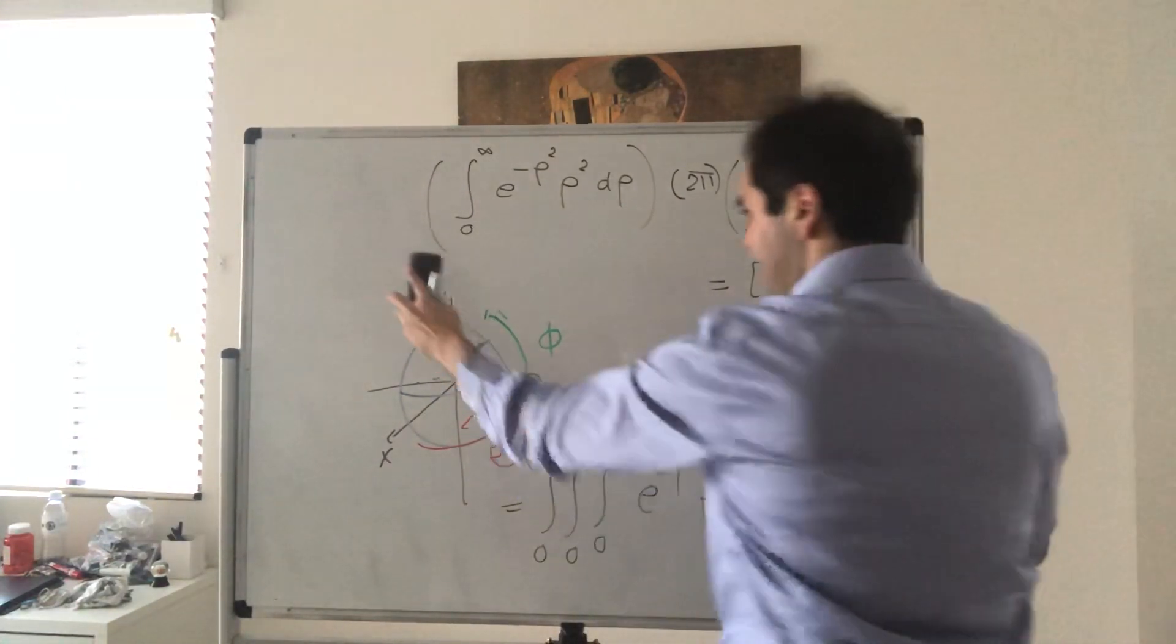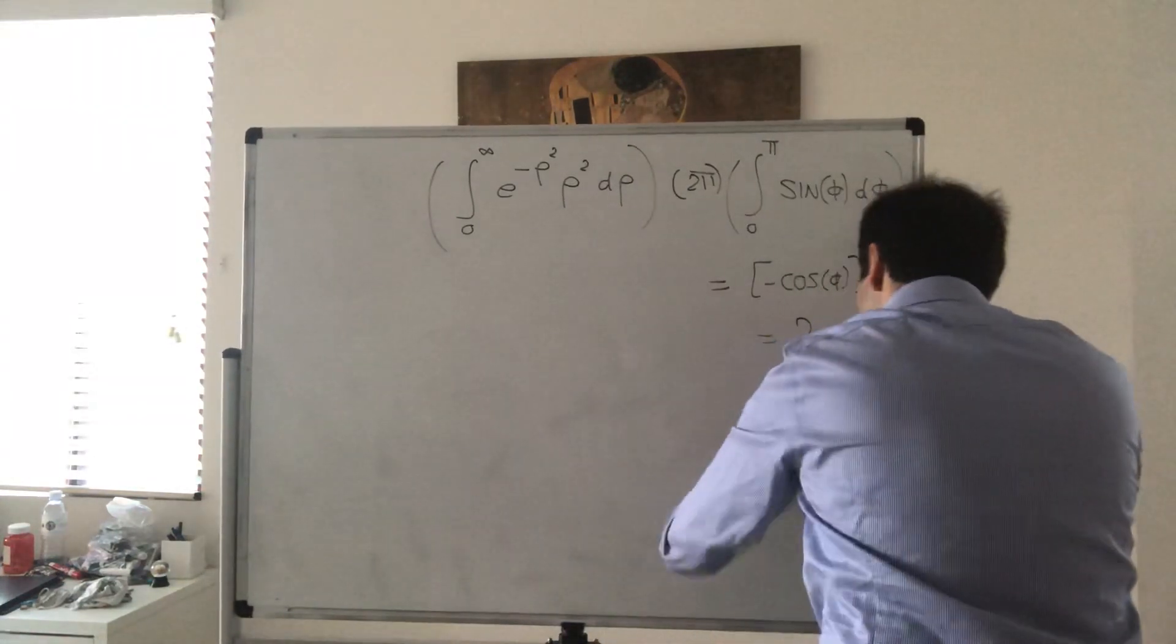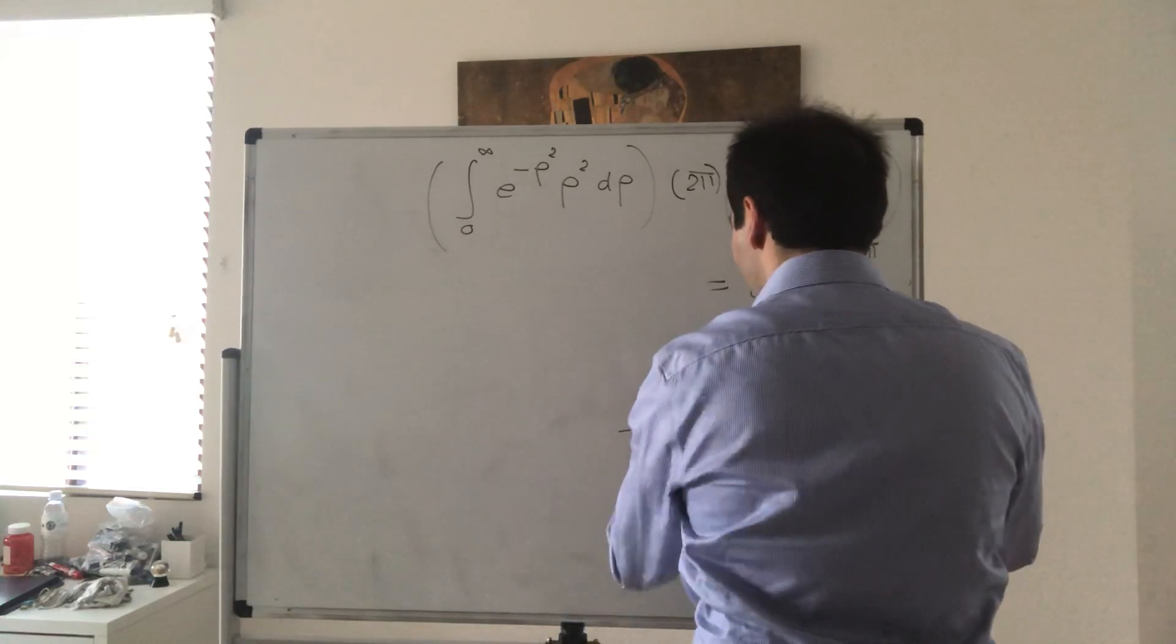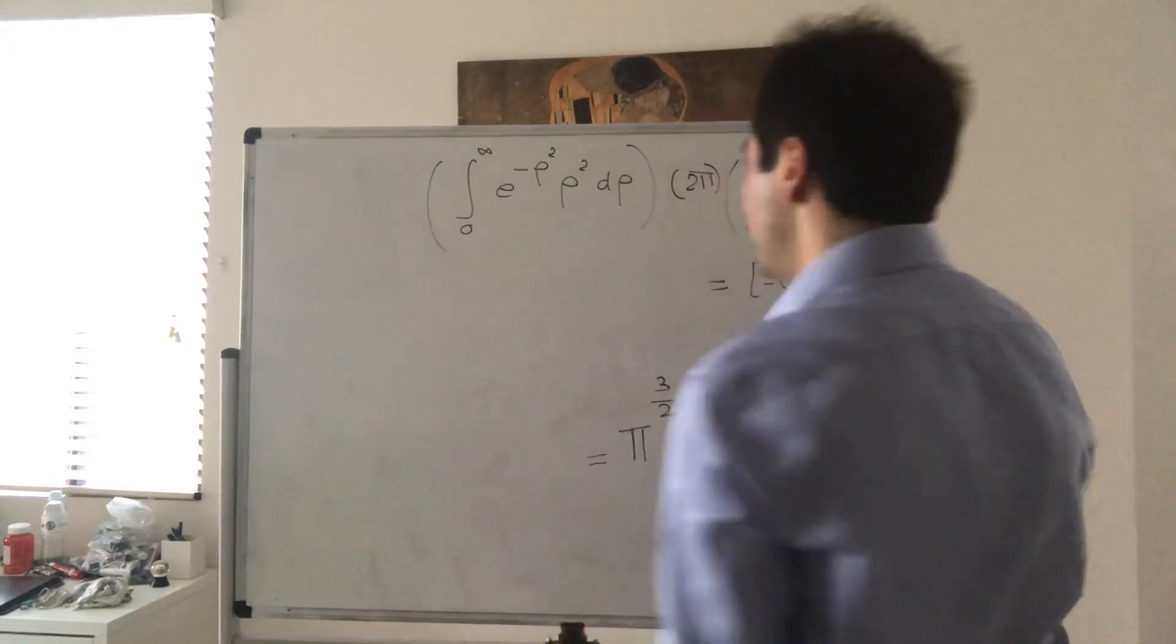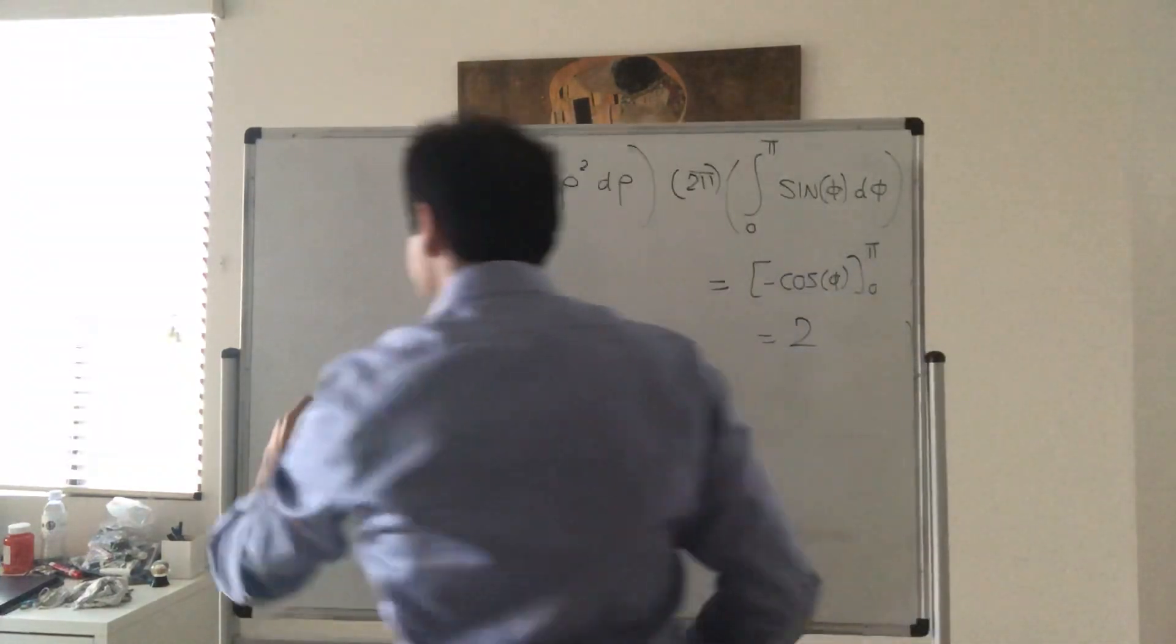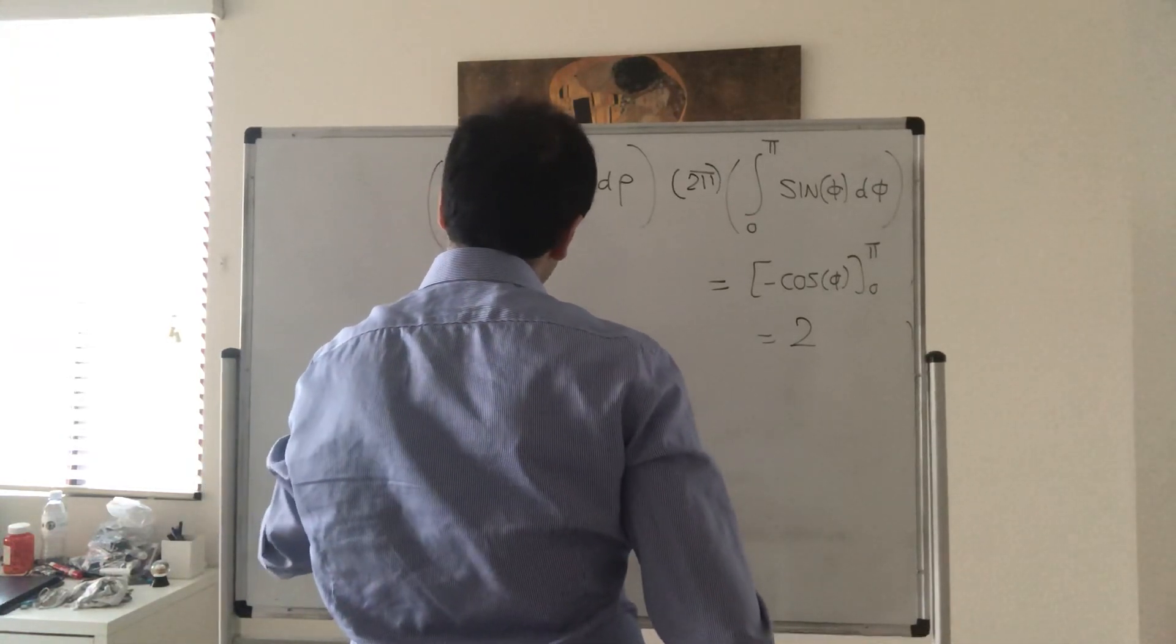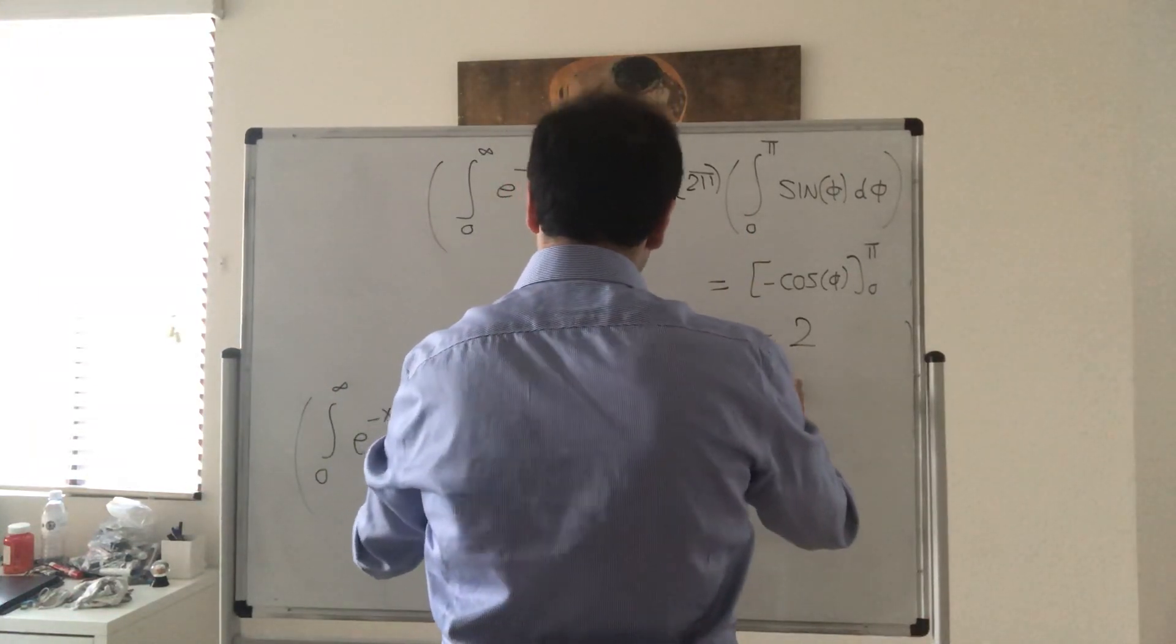And so what do we have? In the end, remember what that was equal to. That was equal to square root of pi cubed, so pi to the 3 halves. But what is equal to pi to the 3 halves? This whole integral, which is, notice, the integral that we want except with rho instead of x. So integral from 0 to infinity of e to the minus x squared, x squared dx, times 2 pi times 2, so times 4 pi.